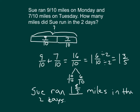Let's think whether or not this is reasonable. We had 9 tenths of a mile already on Monday — 9 tenths of a mile is almost 1 — and we would add 7 tenths to that. So we could count up: 9 tenths, 10 tenths, 11 tenths, 12 tenths, 13 tenths, 14 tenths, 15 tenths, and 16 tenths. Using my fingers to count up those tenths, 16 tenths does fit with my simplification. So Sue ran 1 and 3 fifths miles in the two days.